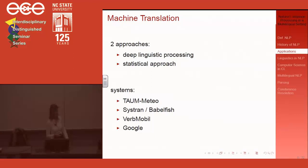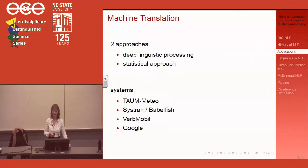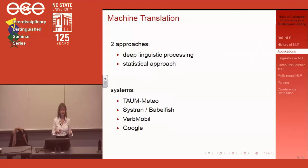METEO was used in Canada where weather forecasts had to be published in both English and French. Since weather forecasts have very little variation — temperatures, sunny, cloudy, rainy, maybe snow — the domain was so constrained it worked really well. They were losing translators every three months from boredom, but after introducing the system with humans to correct the output, translators stayed for three years or longer. That's considered a success.